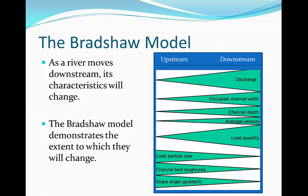Now there are certain reasons for this. For example, the discharge will increase because more tributaries will be heading into the river the further downstream you go. The width and depth will also increase because there's going to be more erosion from more discharge in the river. You could probably work through the Bradshaw model as a separate task and write down why you think each of the characteristics will change.